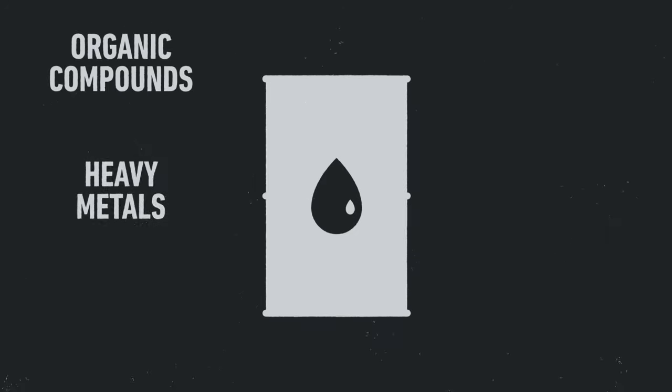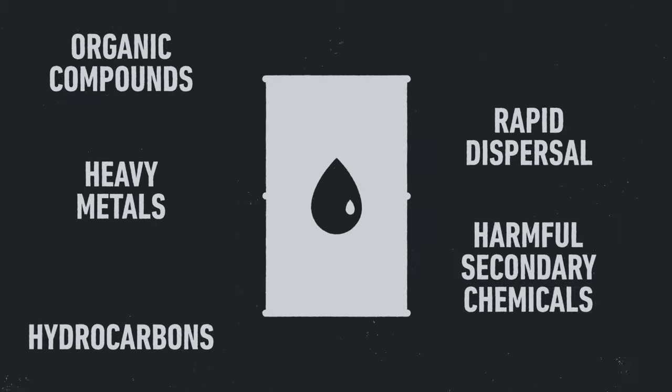They cause such damage to the environment because petroleum is a toxic mix of organic compounds, heavy metals, and hydrocarbons. Add to that rapid dispersal and the breakdown into even more damaging secondary chemicals, and you have a disaster that can cause serious acute and long-term effects.